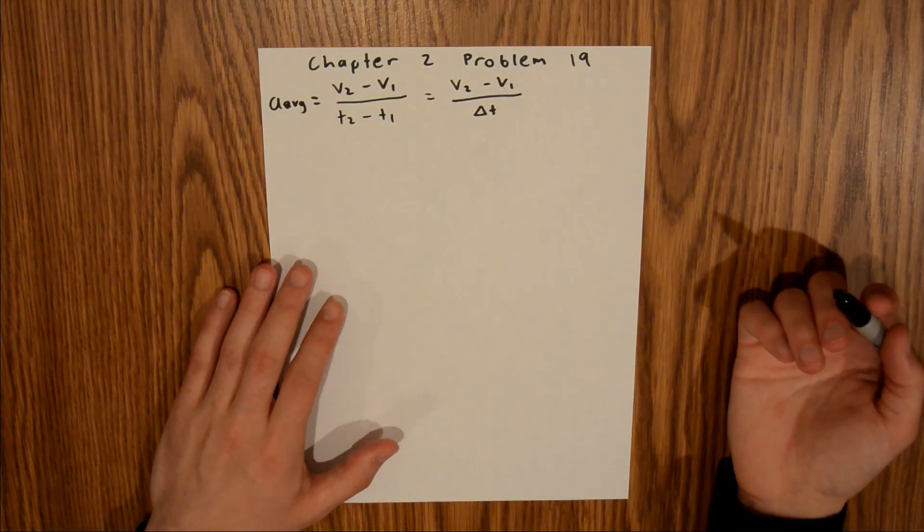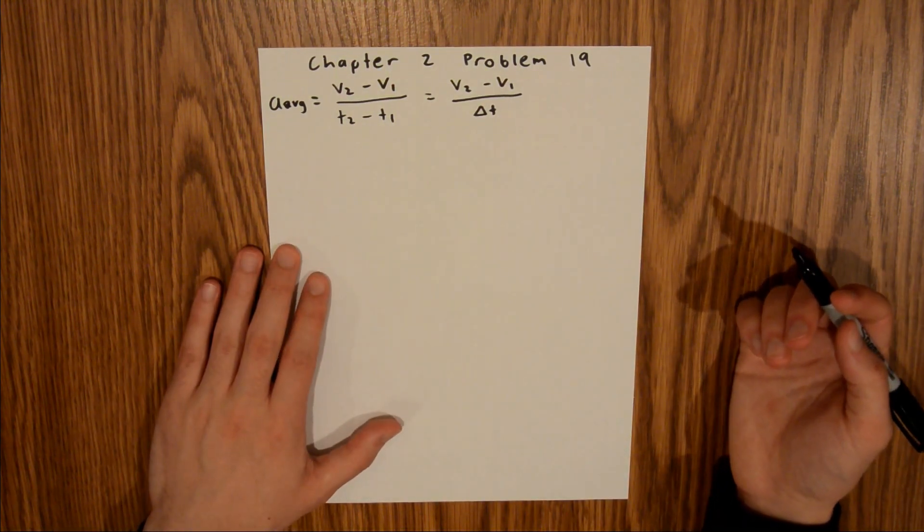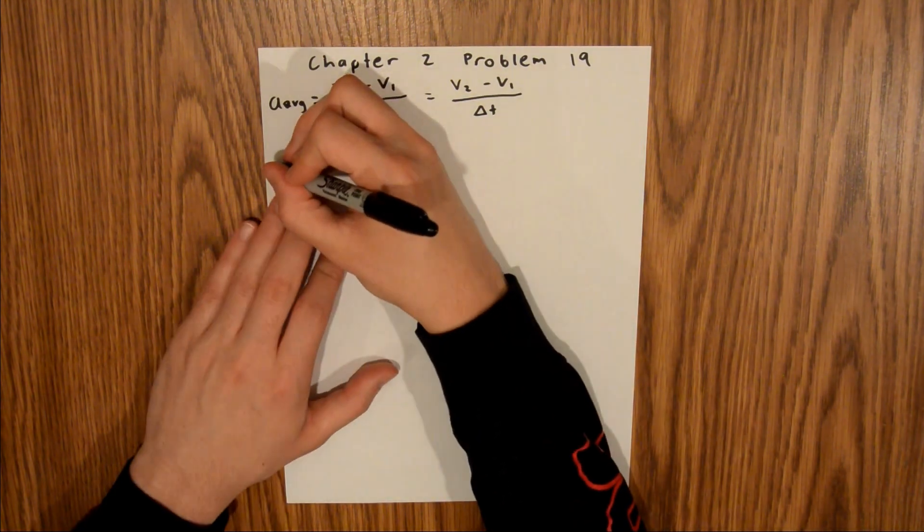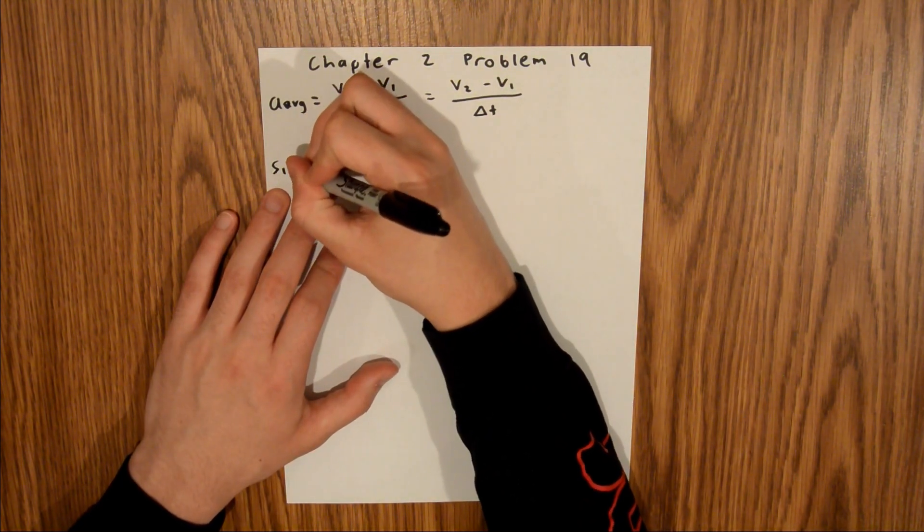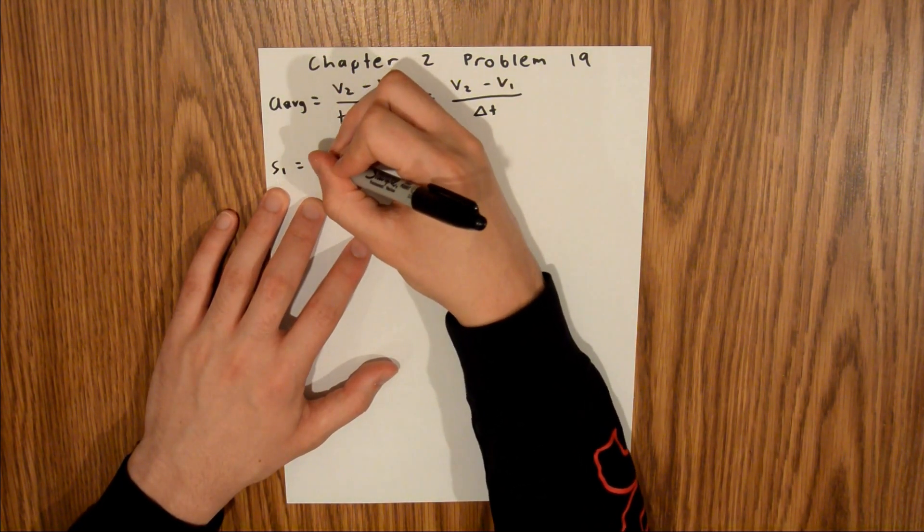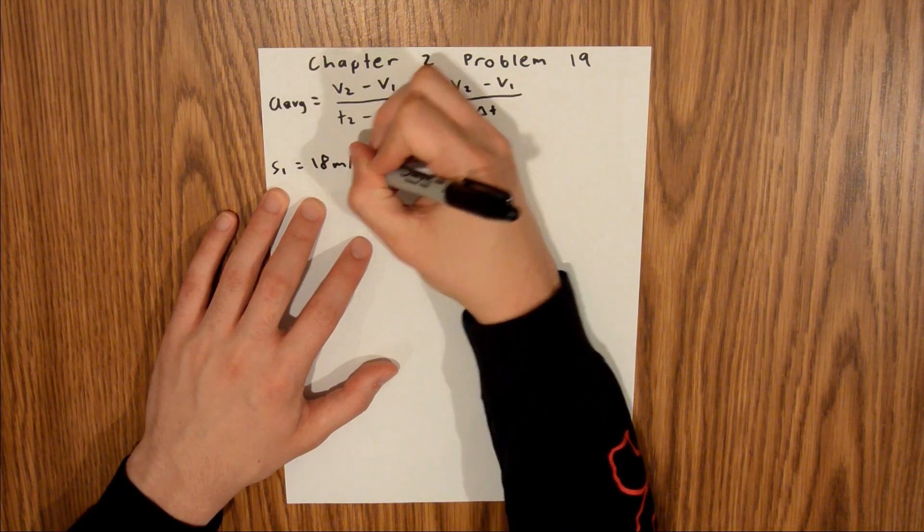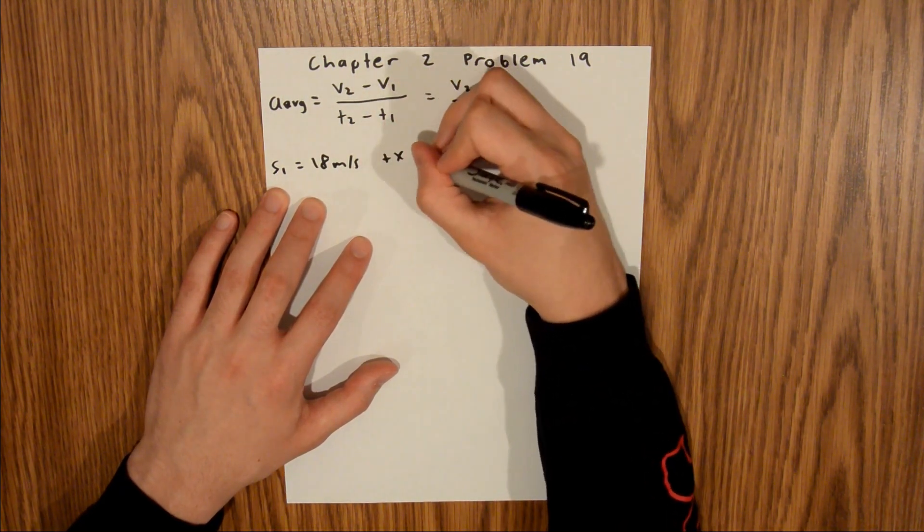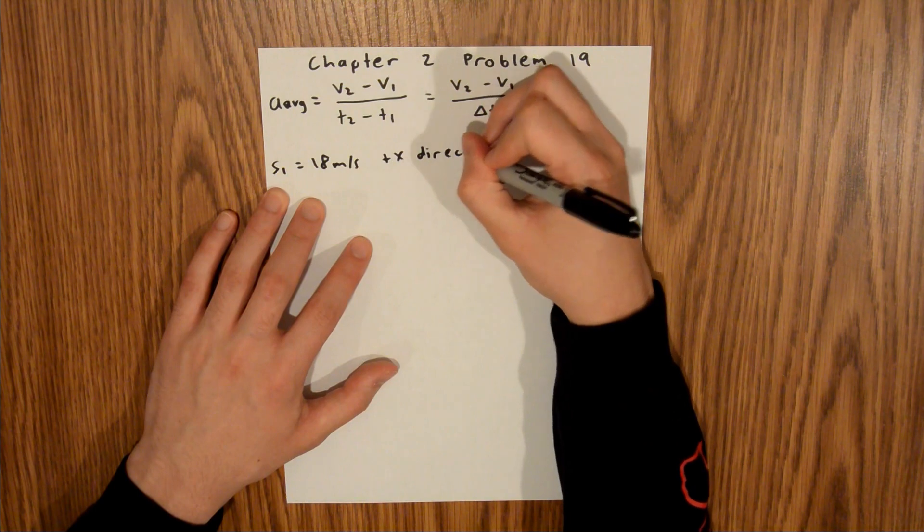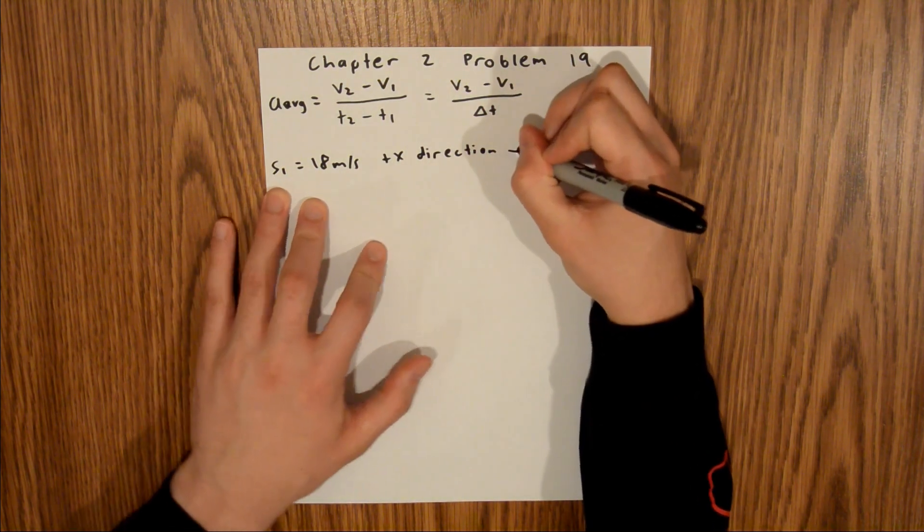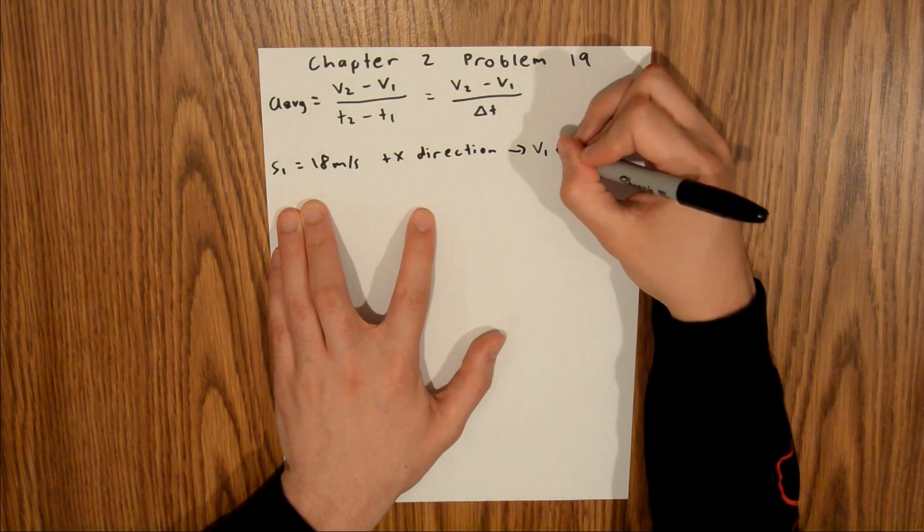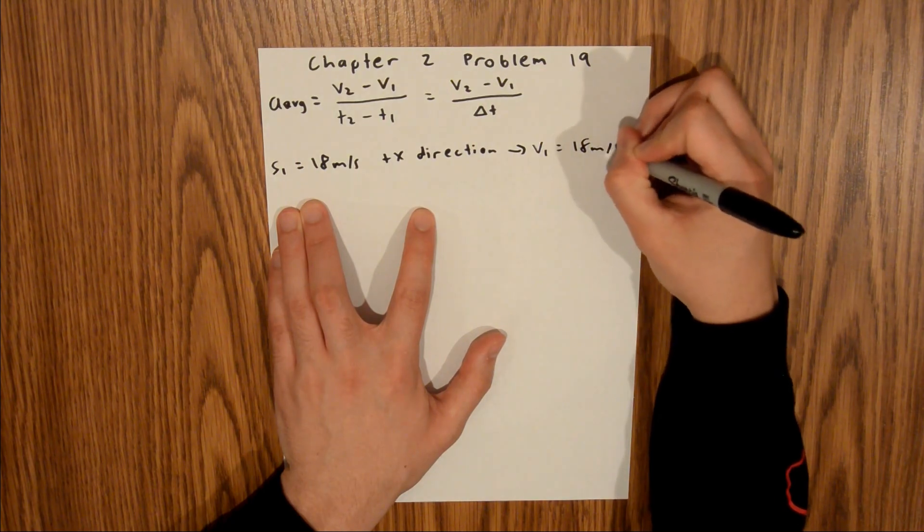We are not given our velocities either; instead we are given speeds and told the direction. And so we're told that S1 is equal to 18 meters per second in the positive x direction, which means that V1 is equal to 18 meters per second.